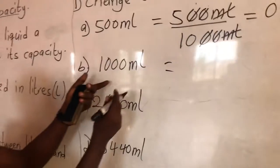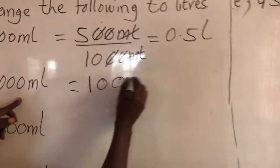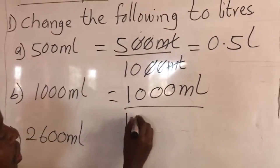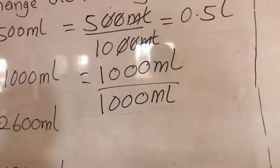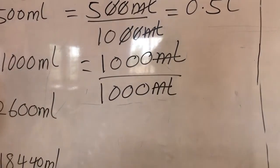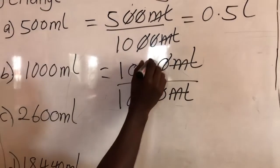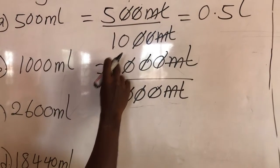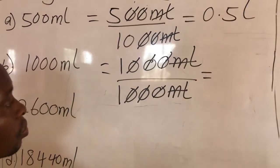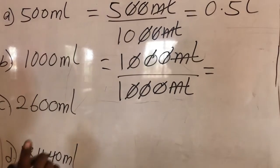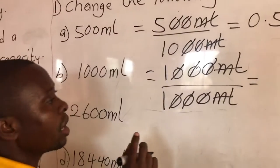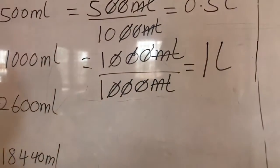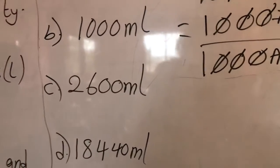The next example is 1000 ml. We divide by 1000. We cancel the zeros: this zero cancels this zero, this zero cancels this, and this zero cancels this. It reduces to 1 over 1, and we know that one divided by one gives us one. So 1000 ml gives us 1 liter.